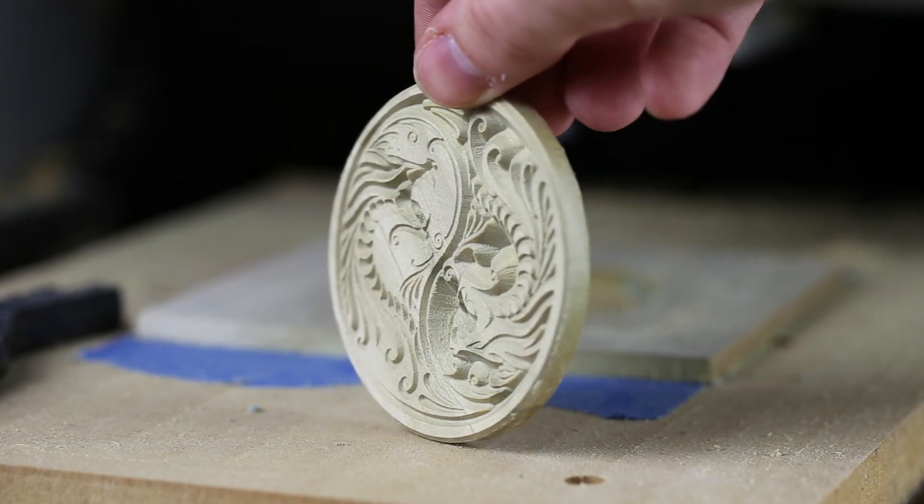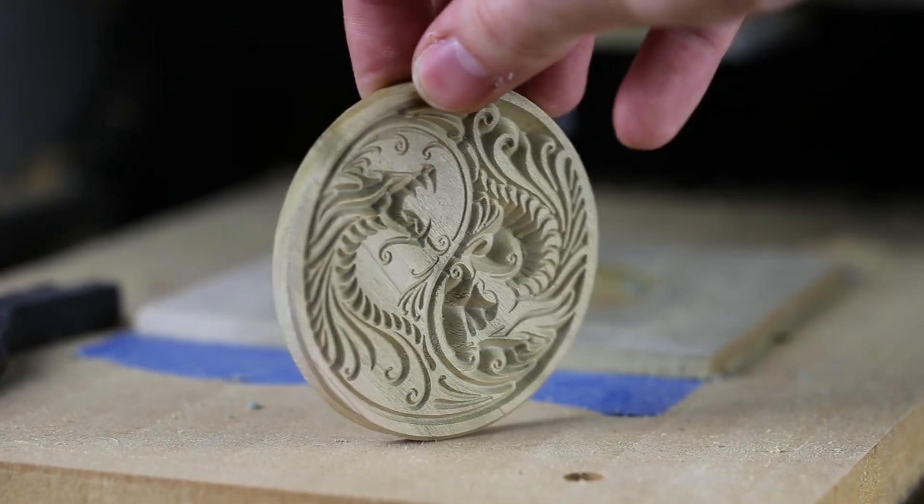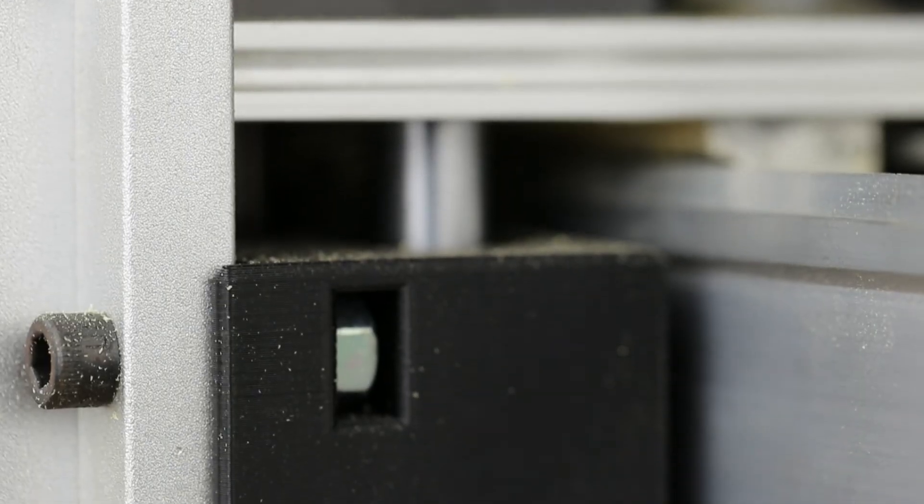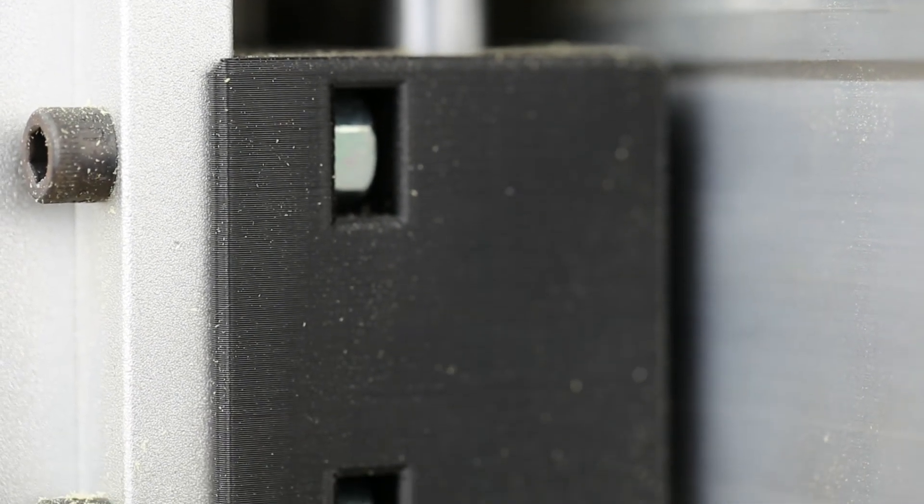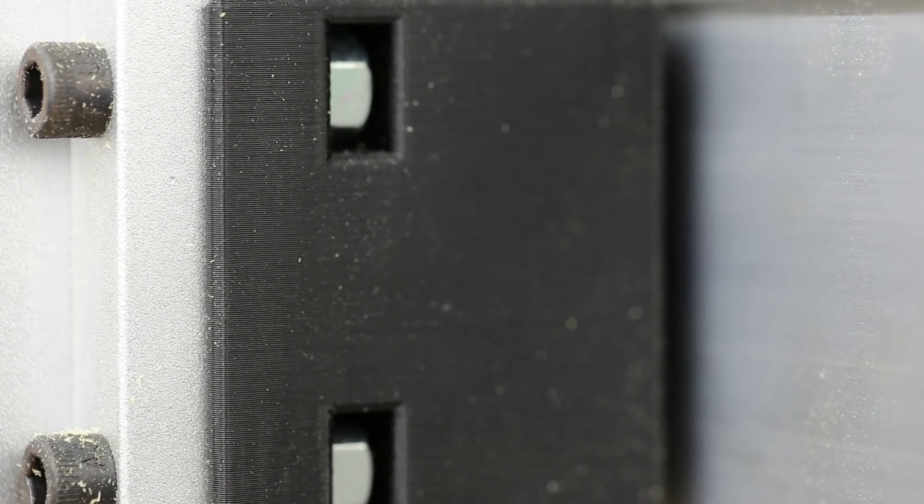This design isn't perfect. Like with the original there's no way to tram the spindle and a metal head would be more rigid. But if you're not working on tight tolerance parts this is one of the fastest and easiest ways to get up and running.